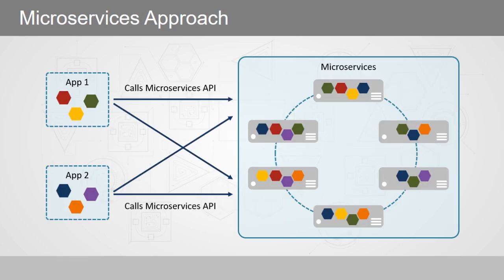The application then uses microservices instead of a larger monolith service. Typically, the application would call an API that would act as a controller — a traffic cop, if you will. This API would conceivably call an individual API for each microservice that needs to be used. Sounds easy, right? Well, yes and no.